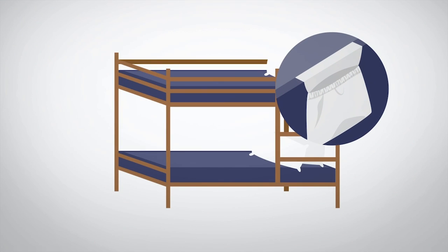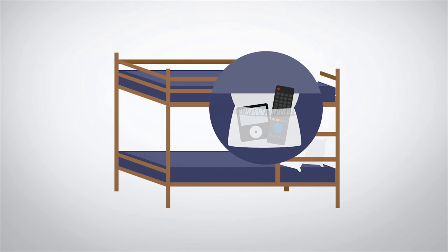Your Simple Sheet set also includes a handy side pocket to secure phones, remotes, and other important personal items.